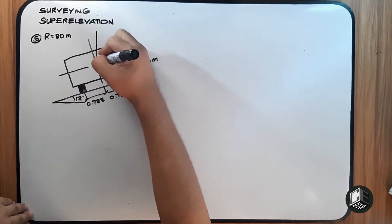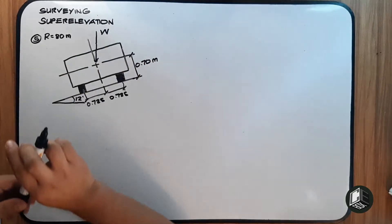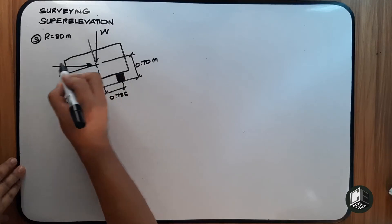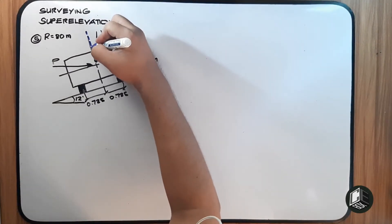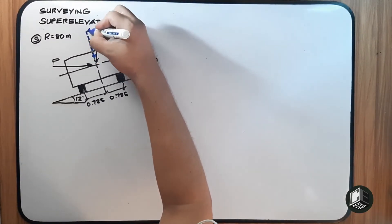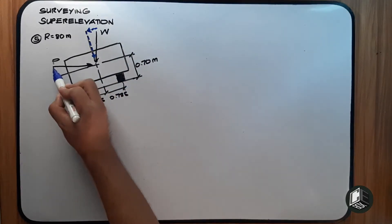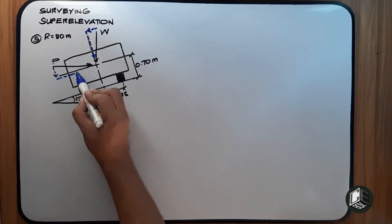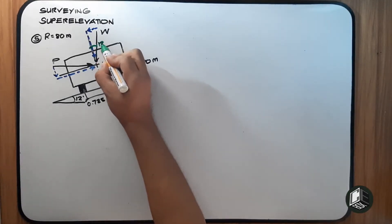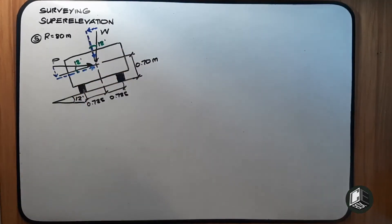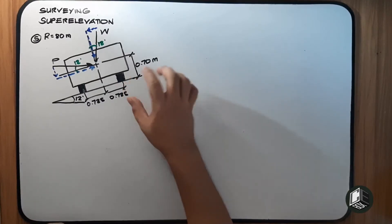We draw the weight W and the centrifugal force P acting on the vehicle. These are the components of our weight W and the components of the centrifugal force P. Since the super elevation angle is 12 degrees, both component angles are 12 degrees as well.